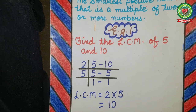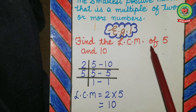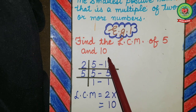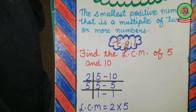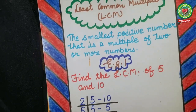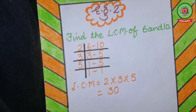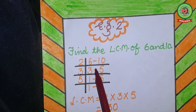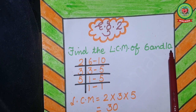That means LCM is equal to 2 multiplied by 5. 2 fives are 10. So 10 is the LCM of 5 and 10. Let's take one more example to understand it. Example number 2: Find the LCM of 6 and 10.